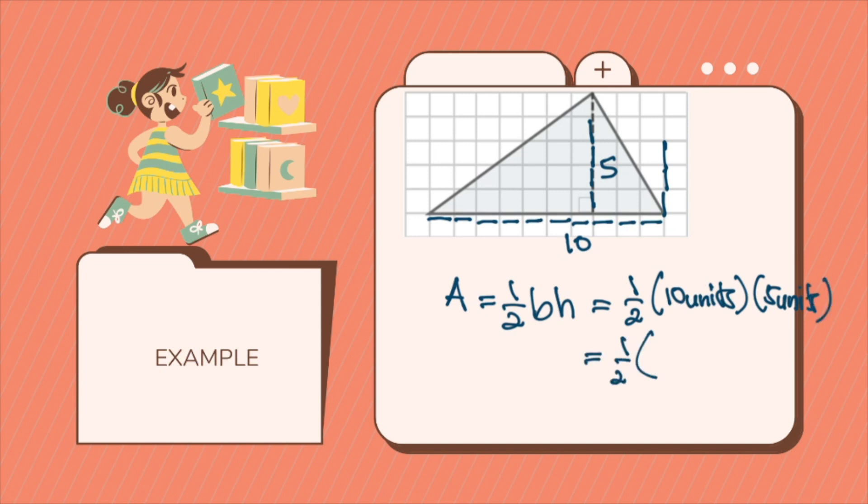So that's one half of ten times five, which is 50 units squared. So anything that you multiply twice becomes a square, and half of 50 will be 25 units squared. Hence, the area of this triangle is 25 units squared.